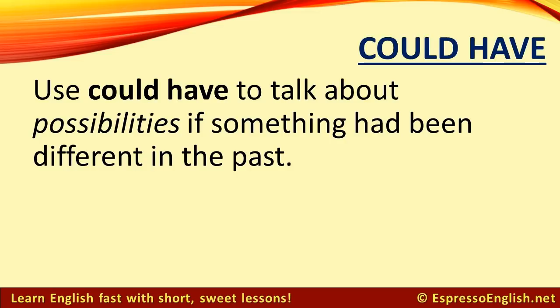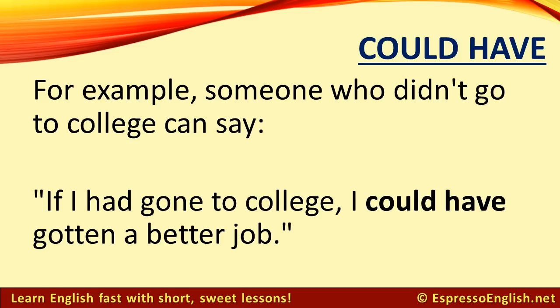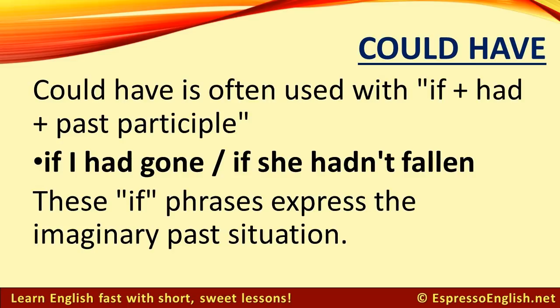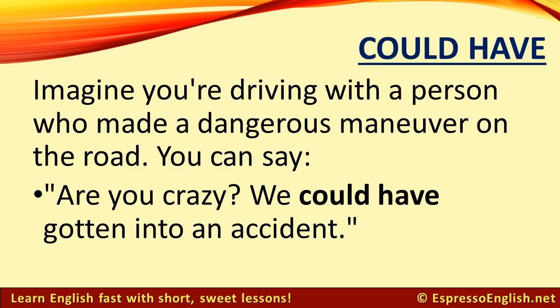Use could have to talk about possibilities if something had been different in the past. For example, someone who didn't go to college can say, If I had gone to college, I could have gotten a better job. When talking about a gymnast who didn't win a competition, you can say, She could have won the gold medal if she hadn't fallen three times. Could have is often used with if plus had plus the past participle — if I had gone, if she hadn't fallen. These if phrases express the imaginary past situation, and then could have expresses the possible results. But you can also use could have to express past possibilities without specifically saying the if phrase. Imagine you're driving with a person who made a dangerous maneuver on the road — you can say, Are you crazy? We could have gotten into an accident.